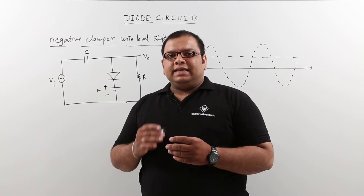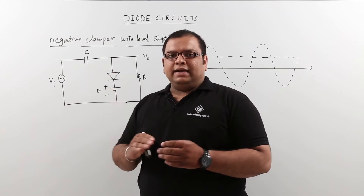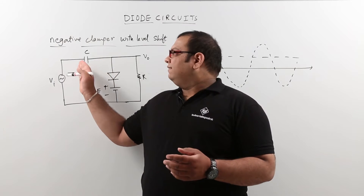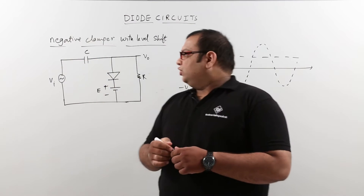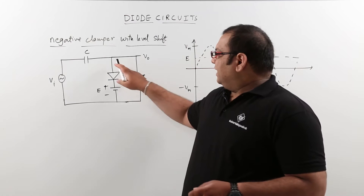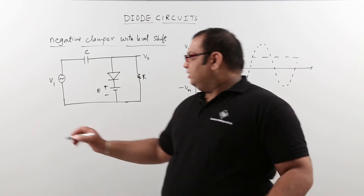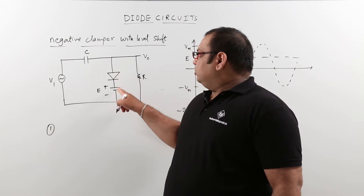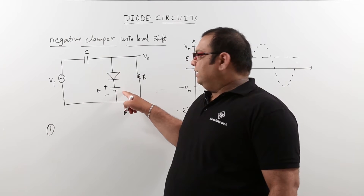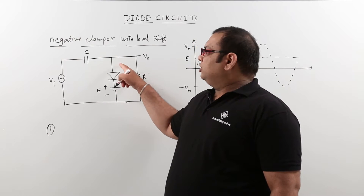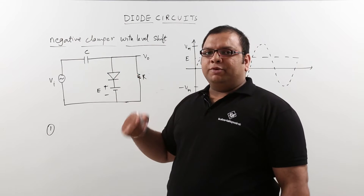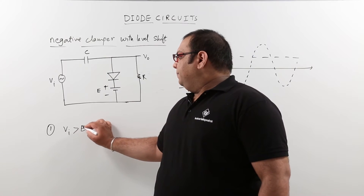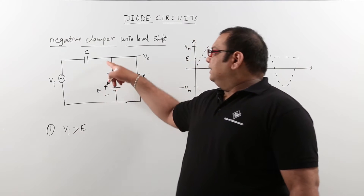First, see when the diode is conducting and calculate the maximum or peak value at which the capacitor will be charged. When the diode conducts, at negative potential we have voltage E. So at positive potential, the input should be more than E — when the input voltage is greater than E, the diode will conduct.